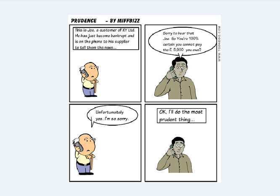The third concept was Prudence. The scenario was a particular trader who was bankrupt and can't pay the £5,000 they actually owe. When a business is 100% sure a customer cannot pay, and they've done everything they can to get the money, they have to write off the debt — reducing trade receivables by £5,000 and showing an expense called a bad debt.